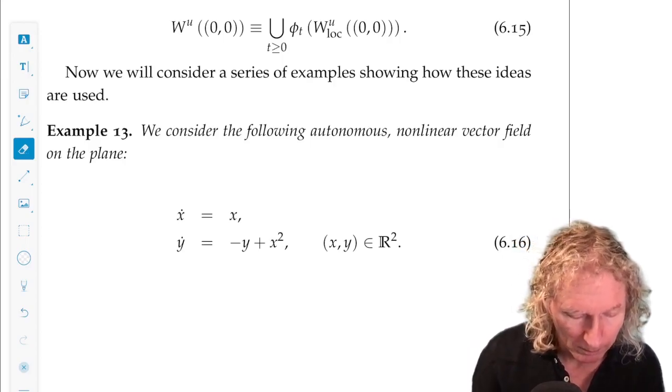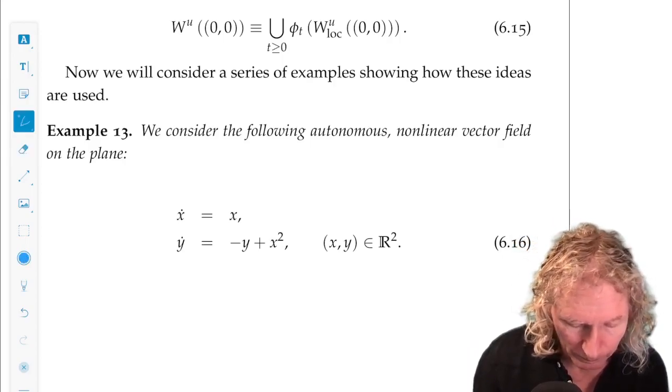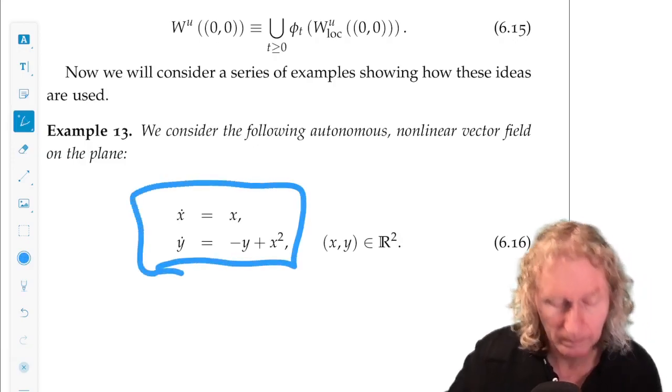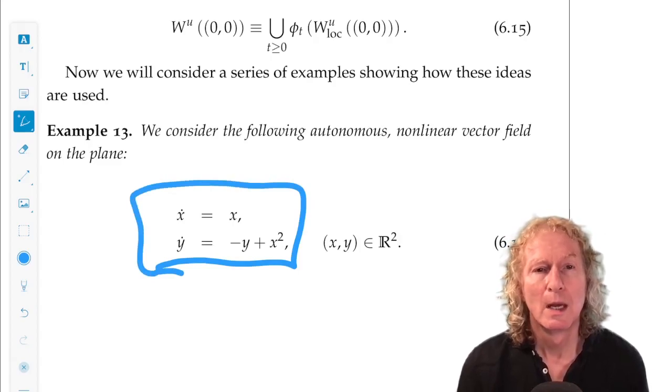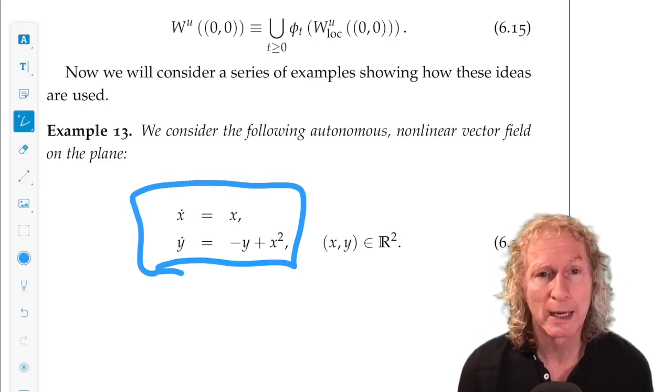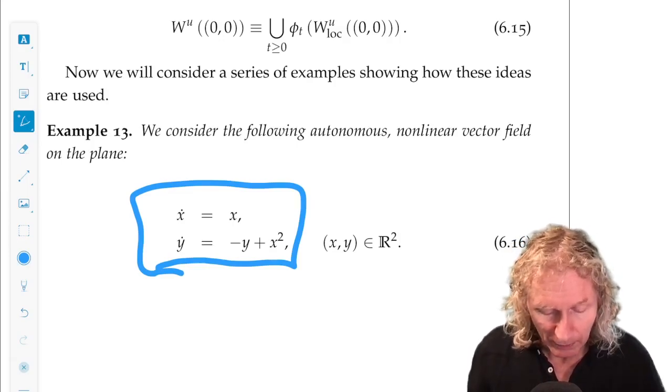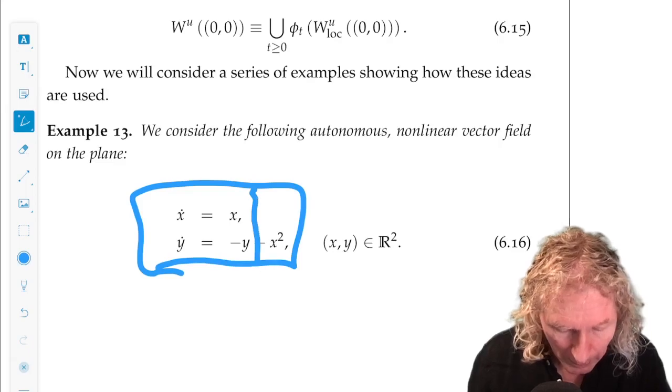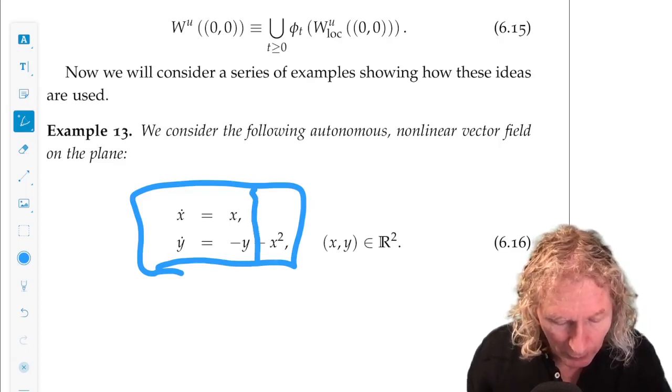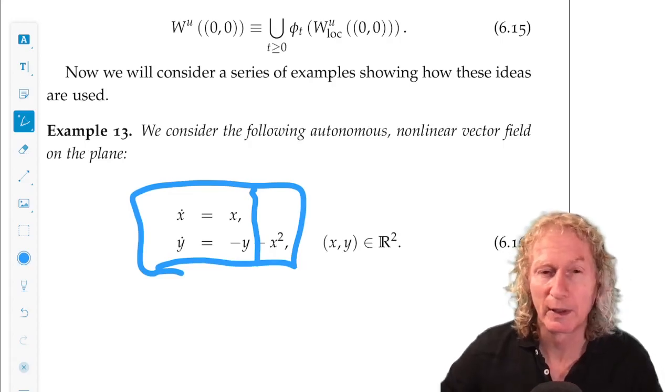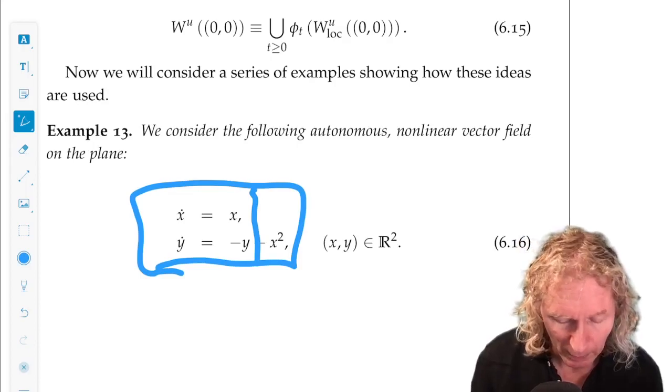So, here's the example. It's two-dimensional, autonomous, and it clearly has a fixed point, equilibrium point, at the origin. And this is in a nice form because it has a linear part, x dot equals x, y dot equals minus y, and the nonlinear term is just x squared. So, you'd think this would be fairly simple. Let's look at it a little more closely.